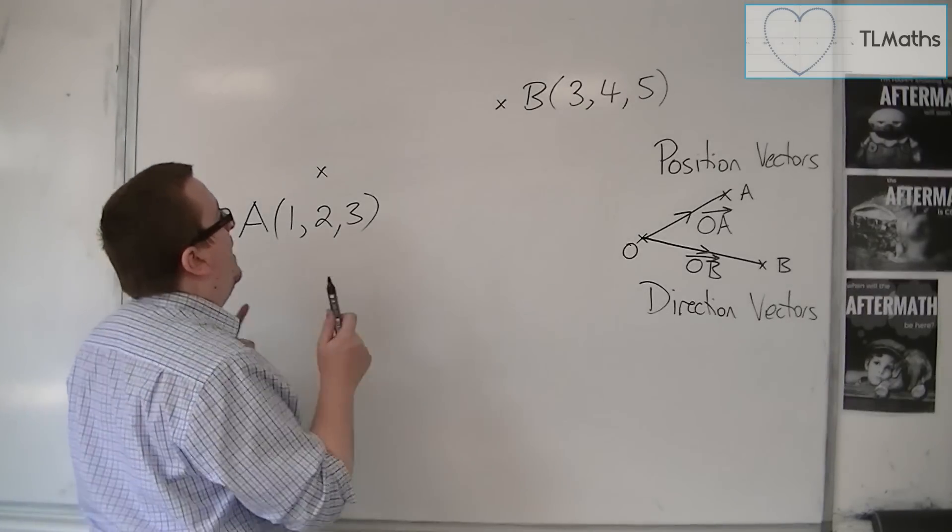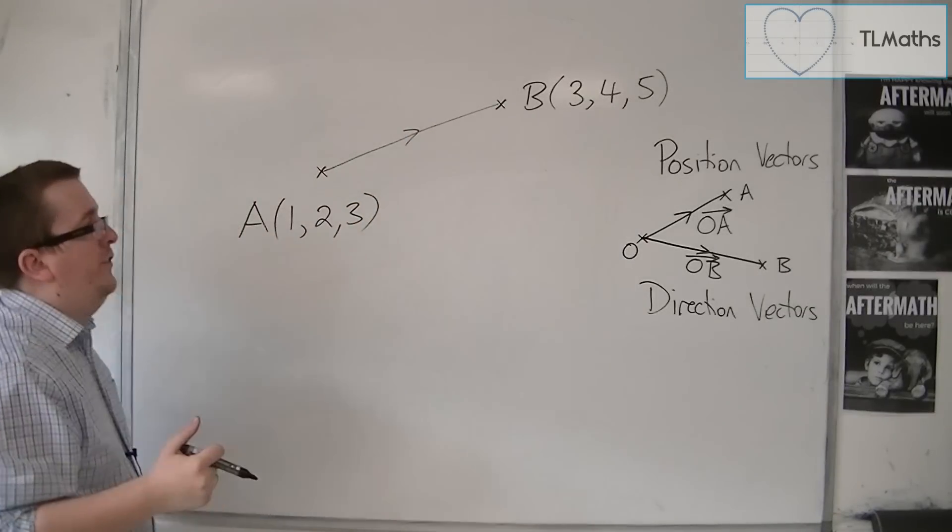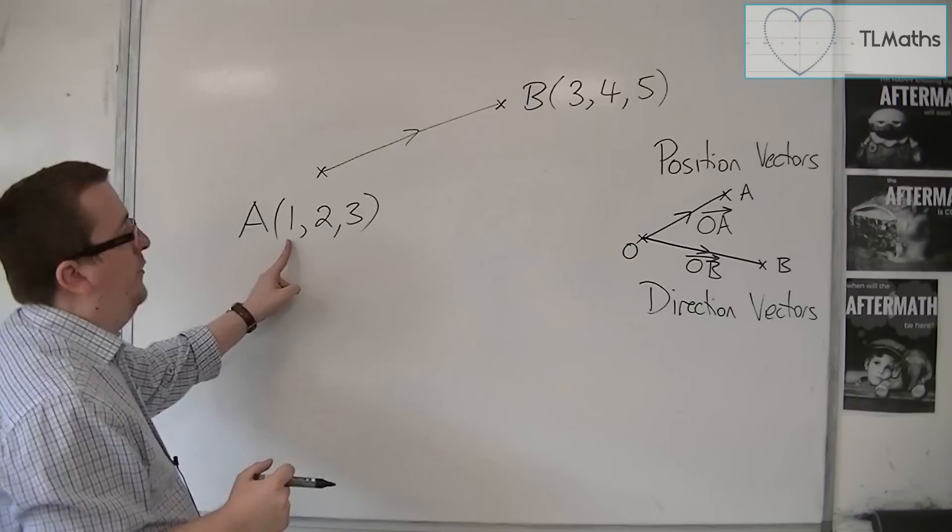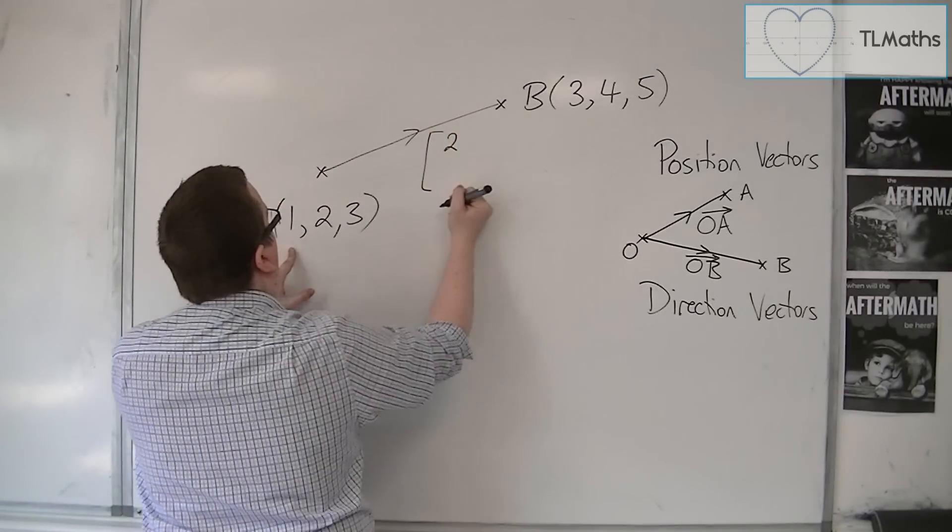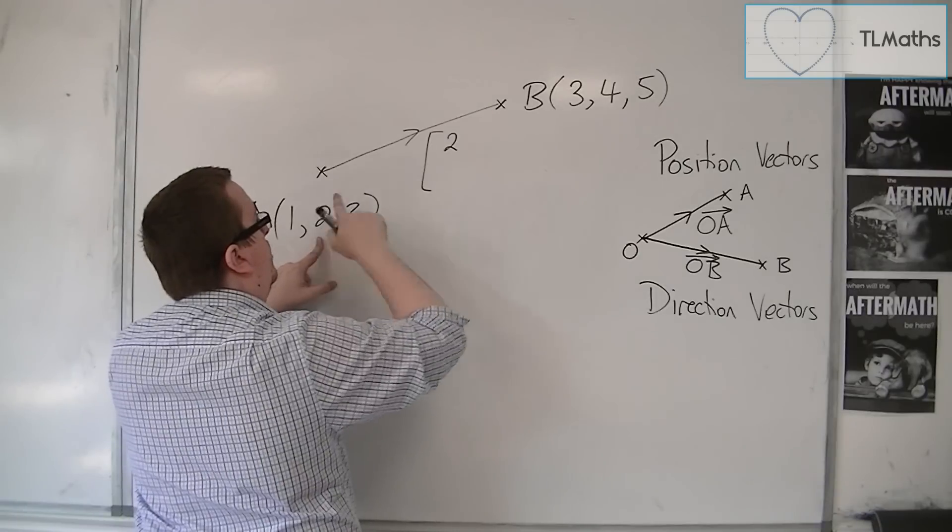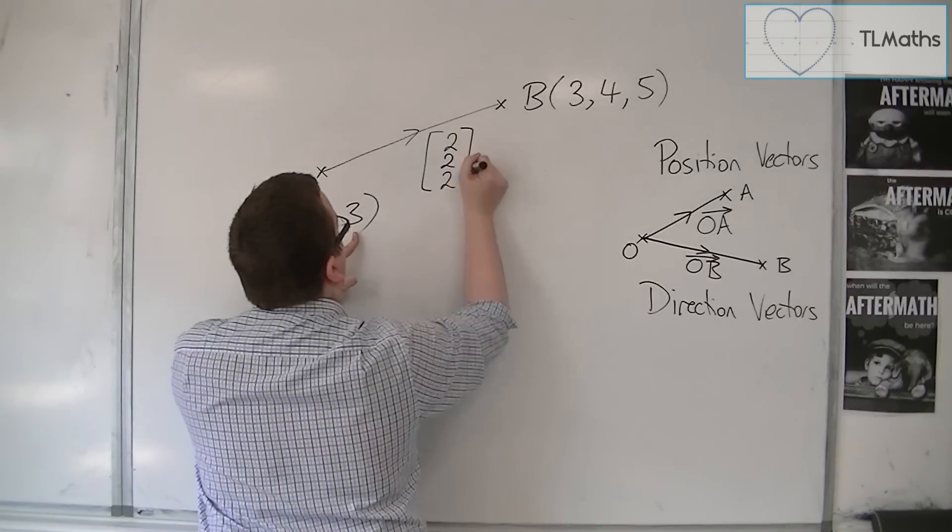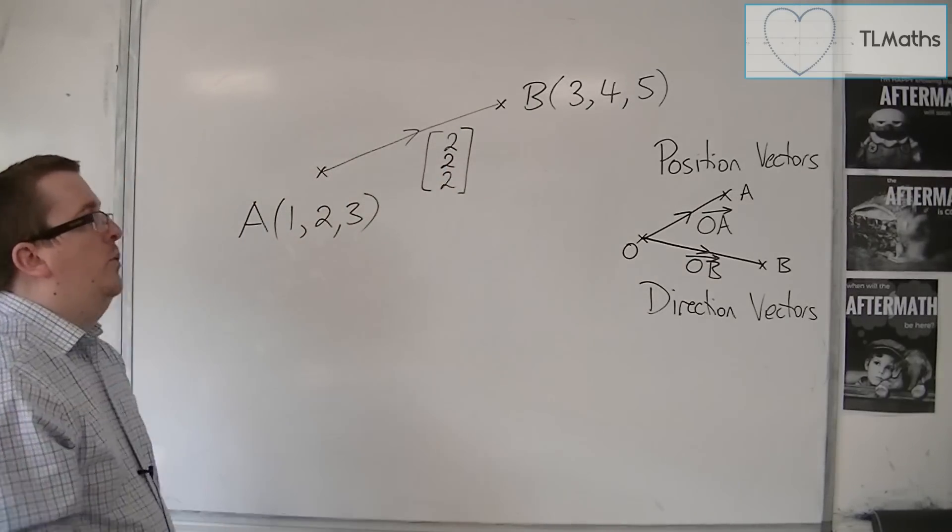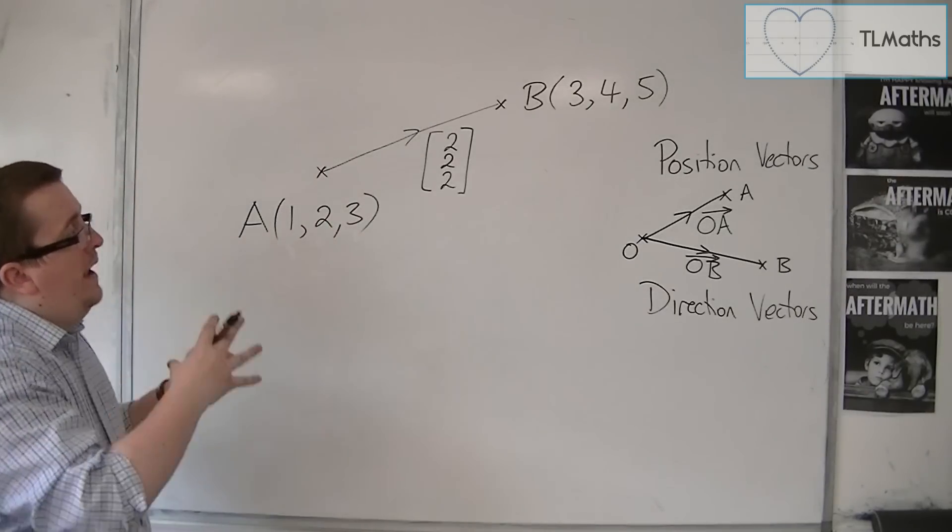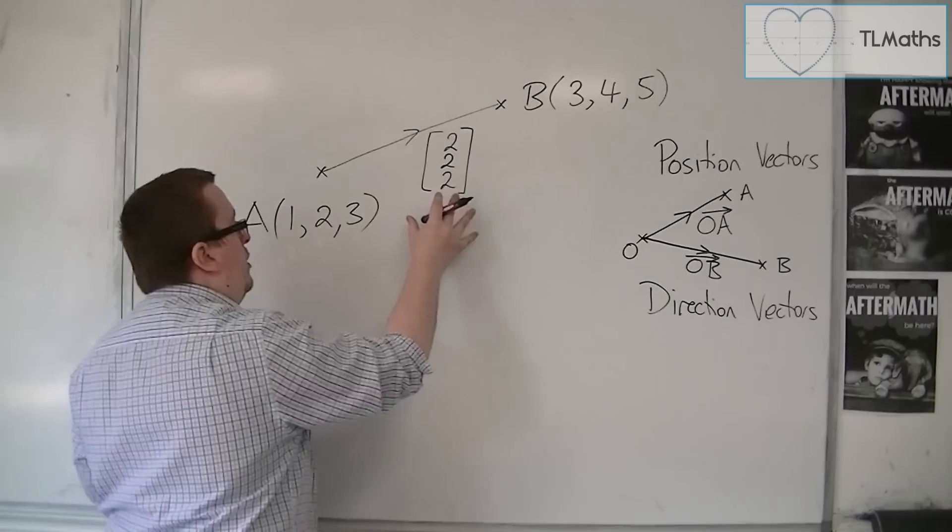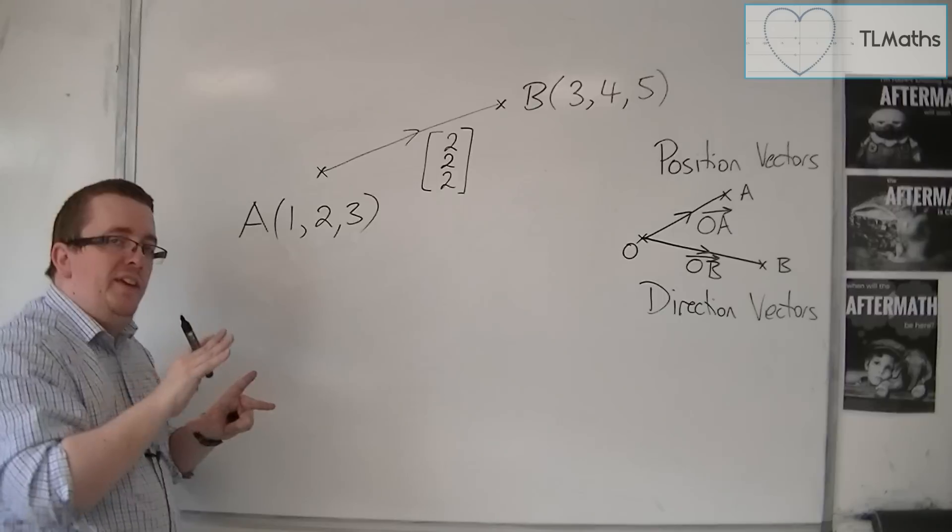Now, in order to actually get from A to B, what I would have to do is I would have to go 2 along in the x direction. I'd have to go 2 along in the y direction, and then from 3 to 5, 2 along in the z direction. So this would tell me how to get from A to B. So that is an instruction that tells me in which direction to travel to get from A to B.